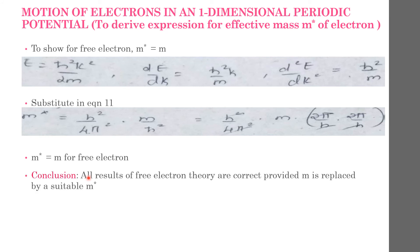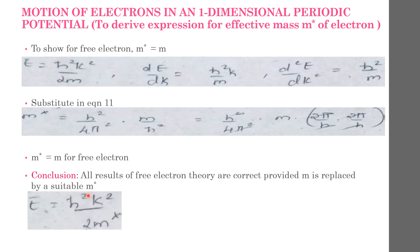So the conclusion is that all the results of the free electron theory are correct, provided m is replaced by a suitable m star. Whatever equations we have derived using the free electron theory are all correct — we only need to replace m by m star. So the equation E = ℏ²k²/2m can be written as E = ℏ²k²/2m star. This is called the effective mass approximation.